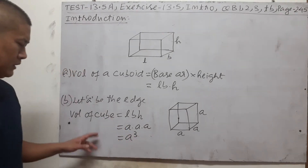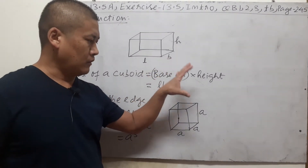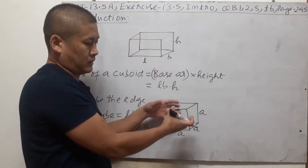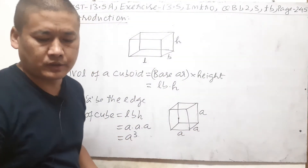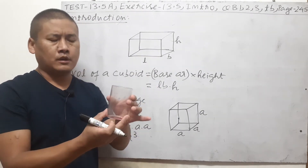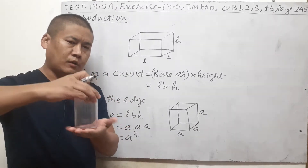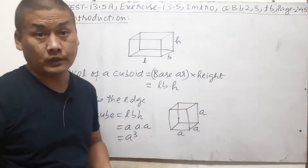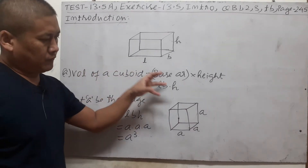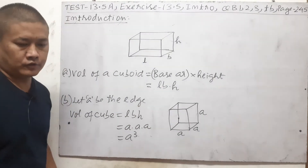Volume, or capacity, means the amount of liquid that can be filled inside a cuboid. For example, the volume of a cup is how much water can go in when you fill it to the brim. So how much liquid can be filled in a solid is called its volume — basically the amount of liquid or air that can be filled inside the solid.